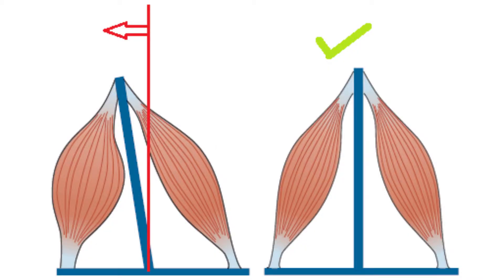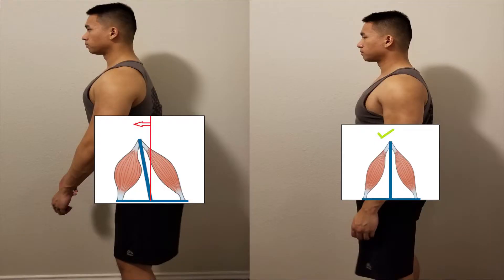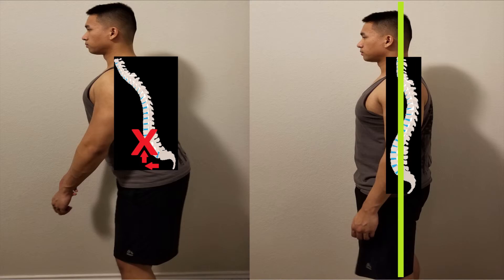Here we can see muscular imbalance on the left versus equal distribution on the right. In the left image, one muscle is shorter than the other. Now let's apply this to the pelvic region. The tight muscle problem comes from the anterior muscles, which include the hip flexors, the quadriceps, and some abdominal muscles. At the same time, the posterior muscles are lengthened — the tight anterior muscles create more of a pull while the posterior muscles, such as the glutes and hamstrings, allow the pelvis into anterior tilt.